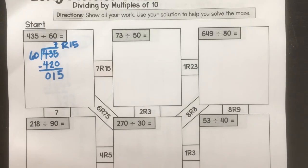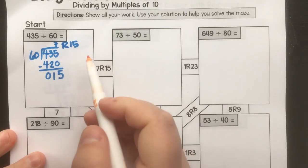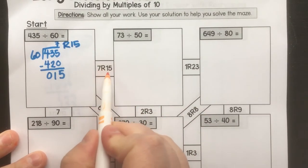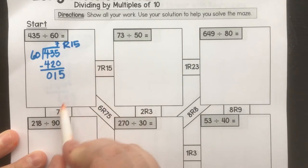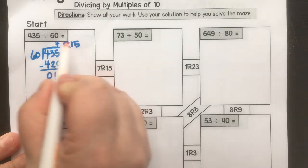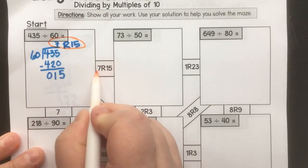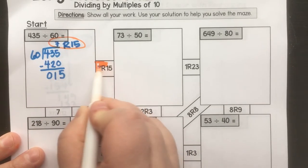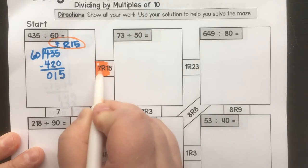So 7 remainder 15. I have my first answer, 7 remainder 15. And so what I'm going to do is I'm going to look at these two options. I either have the option of 7 remainder 15 or 7. Do you see how these two are linked to the box? So I know my answer right here, 7 remainder 15. So I'm going to color in 7 remainder 15.